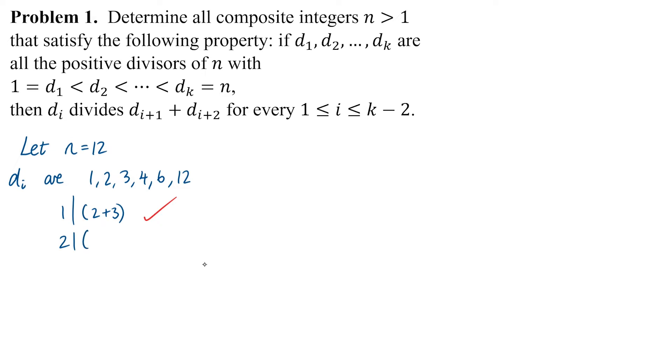Next we're testing if 2 divides 3 plus 4, and we fail there because 7 is not a multiple of 2. So n equals 12 fails our test, and we need to look for other composite numbers.